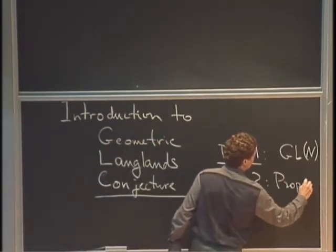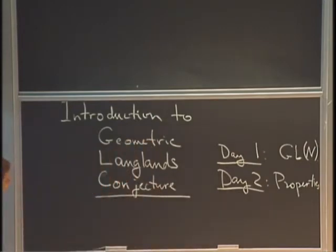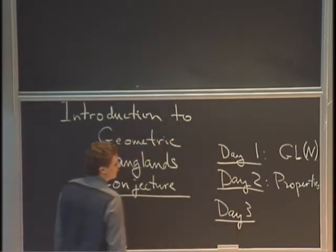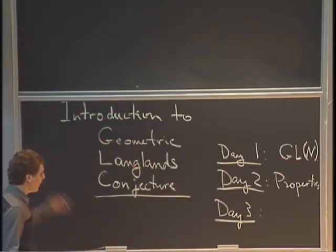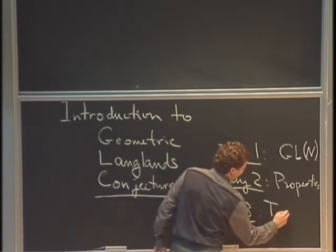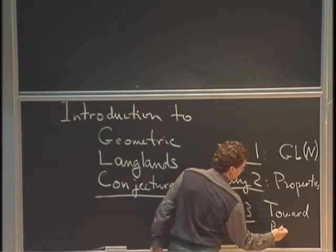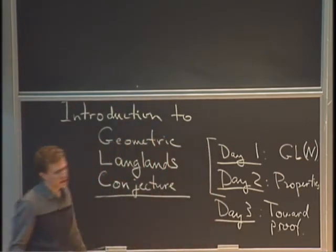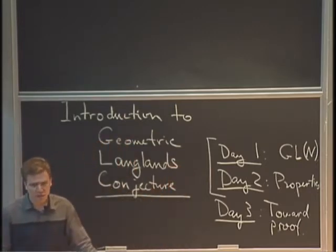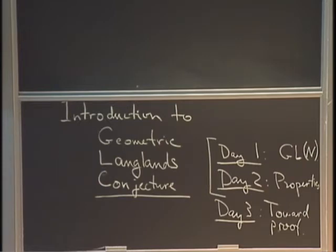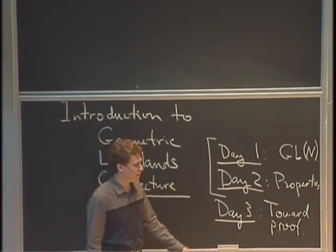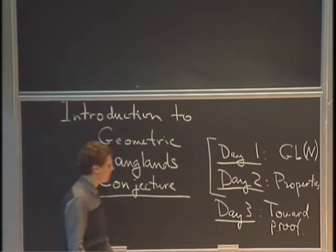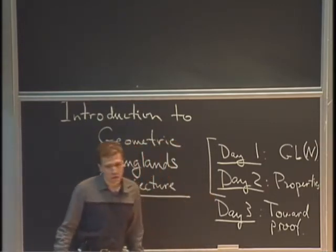Tomorrow I'll also say something about the properties of the Geometric Langlands Conjecture. Then on the last day of the workshop, one way to call it is 'towards the proof,' but really it's more towards the statement. The first two days will be what could be called the naive version of the Geometric Langlands Conjecture, which means the spirit will be there but I will not be able to make precise statements. Only near the end will I be able to say something about how to actually fix the problems and how you can hope to prove the conjecture.